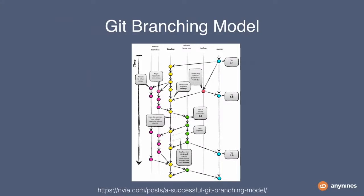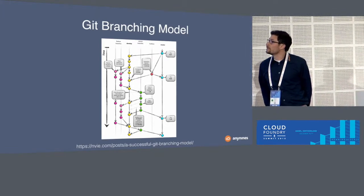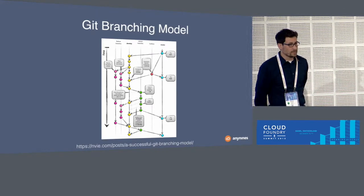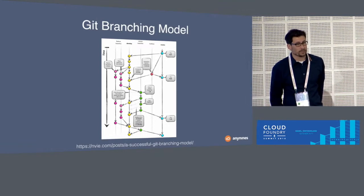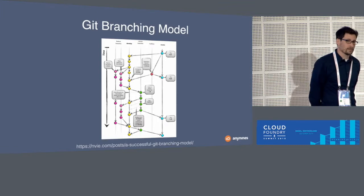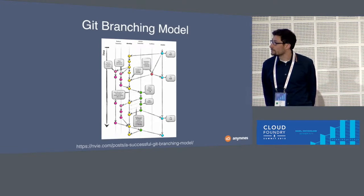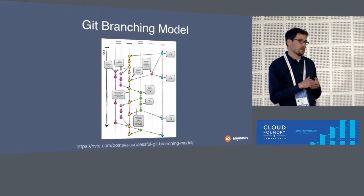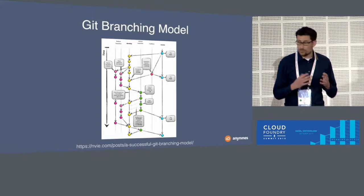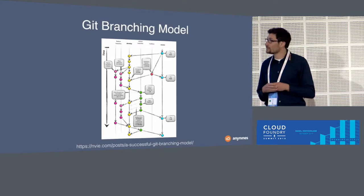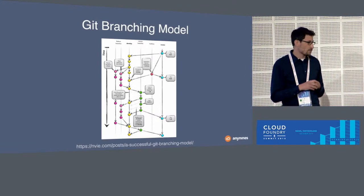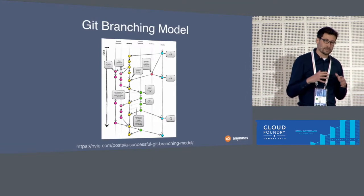You may already know this picture — it describes the Git workflow from Vincent Driessen. In 2010, he described how he managed versions of software. Basically, you have a master and a develop branch. Master is for releasing your software, and from the develop branch you create feature branches or hotfix branches. The idea is that in the master branch you only have stable versions of your software.